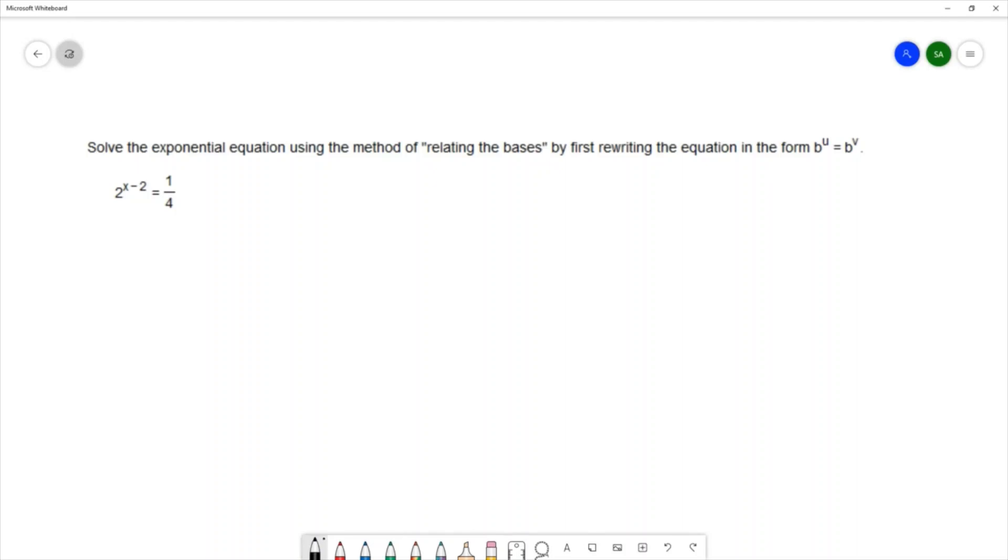On the left I'll leave it the same to be 2 to the x minus 2. On the right I'm going to change 4 to be 2 squared.